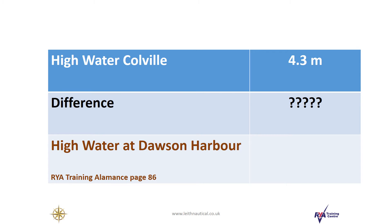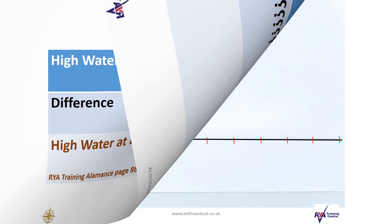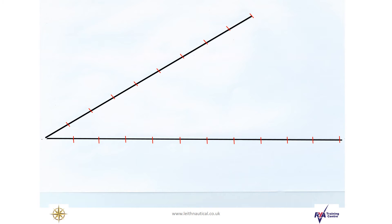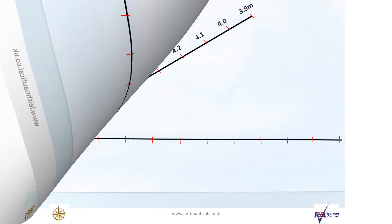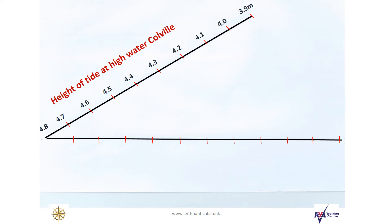When the high water height at Colville is between 4.8 metres and 3.9 metres, we need to interpolate the difference for the high water height at Dawson Harbour. One way to do this is to use a crocodile graph. On one scale we can mark off the height of tide at high water Colville, ranging from 4.8 metres to 3.9 metres.